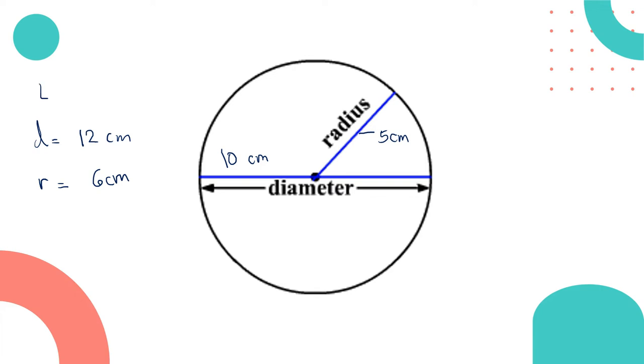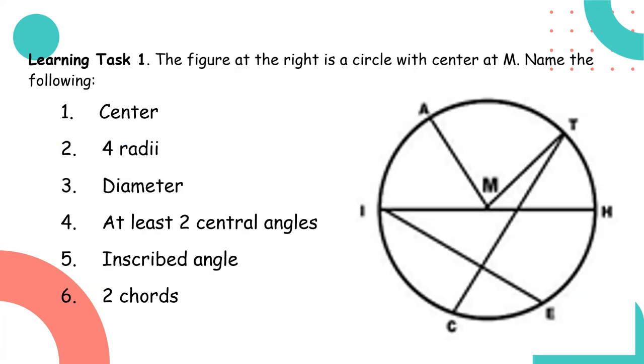So you can now see the difference between diameter and radius. The radius is half the measure of the diameter.